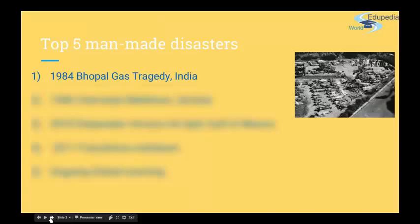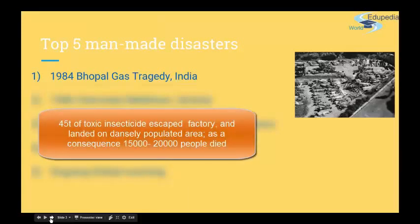What happened then is that around 45 tons of the dangerous gas methyl isocyanate escaped from an insecticide plant owned by an American firm. The gas drifted over densely populated neighborhoods around the plant, killing thousands of people immediately and creating a panic as tens of thousands of others attempted to leave Bhopal city. The final death toll was estimated to be between 15,000 and 20,000 people, and some half a million survivors suffered respiratory problems, eye irritations, blindness, and other maladies resulting from exposure to the toxic gas.